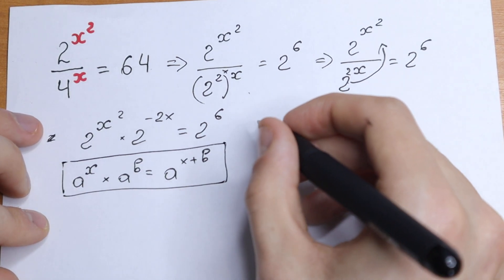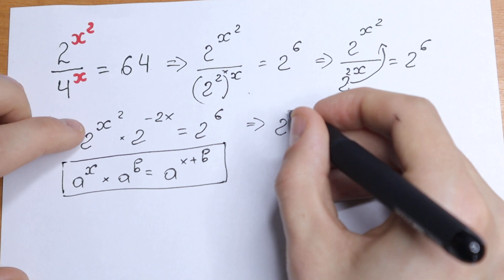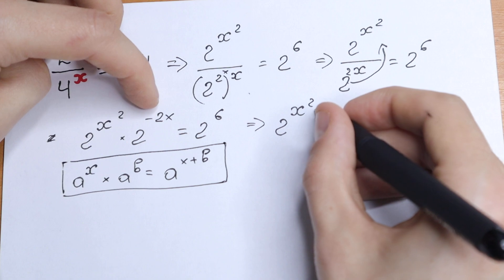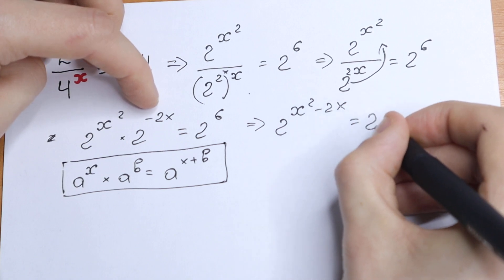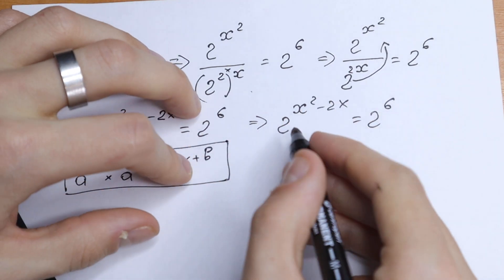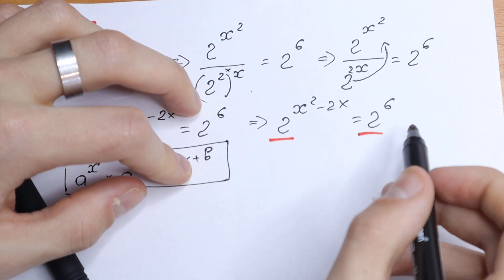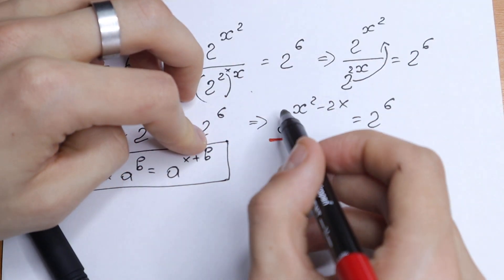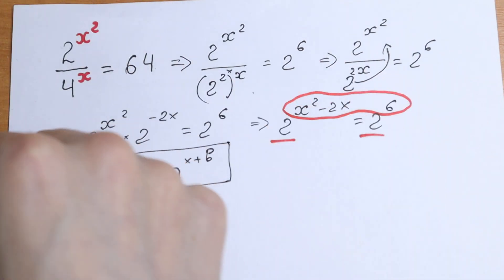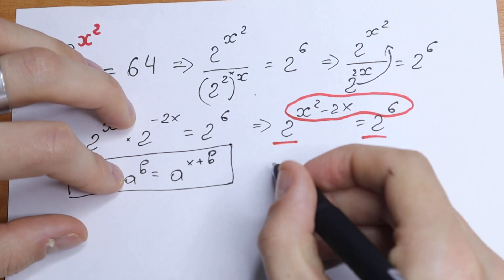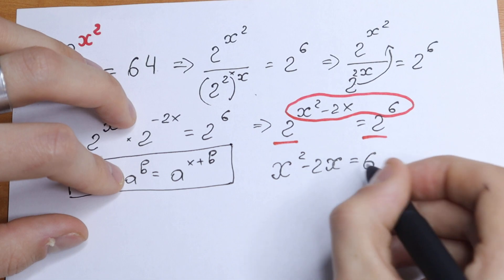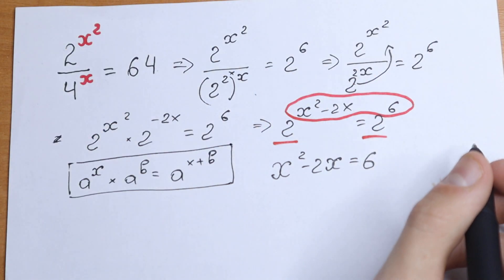So applying that rule, we will have 2 to the power x squared minus 2x, equal to 2 to the 6th power. Since we have the same base on both sides, for the equation to hold, the exponents must be equal. So we write: x squared minus 2x equals 6.